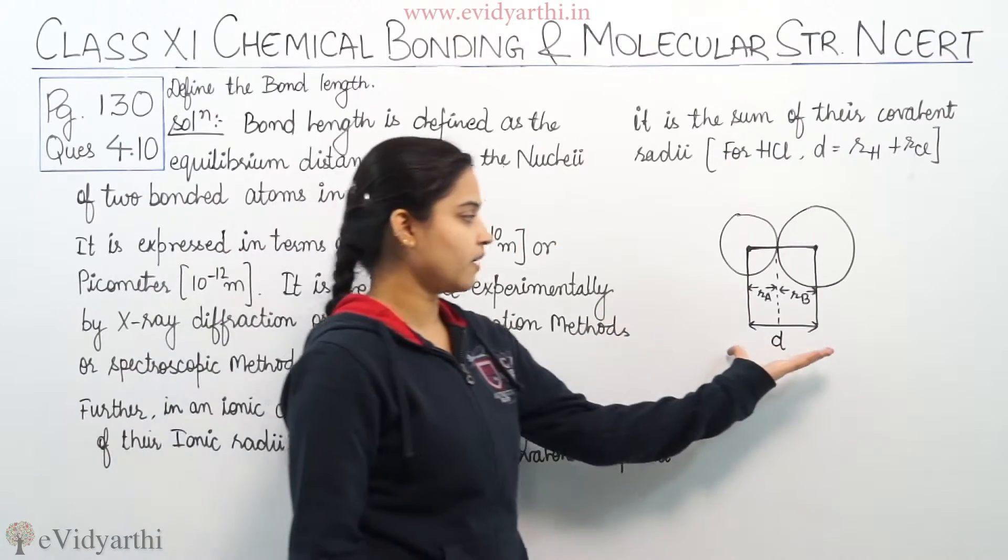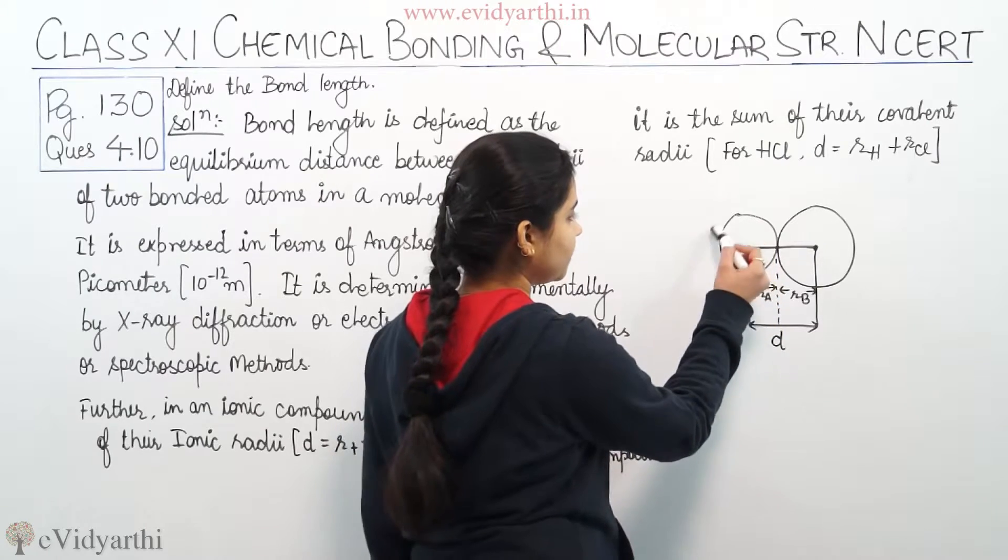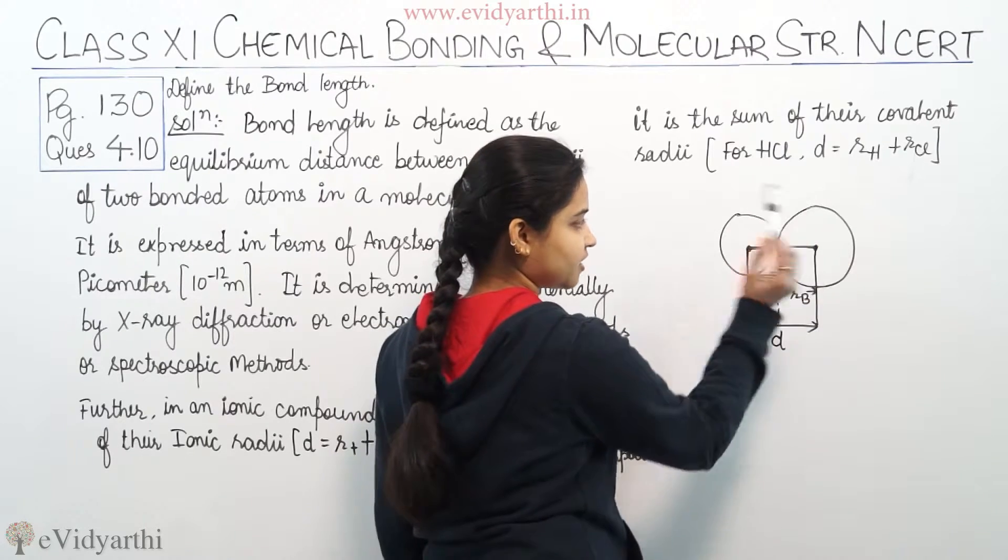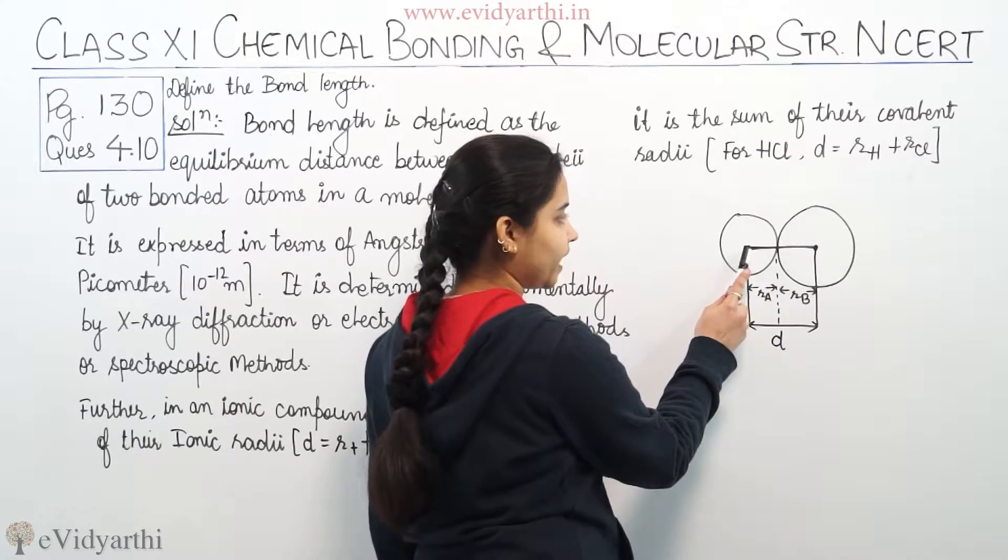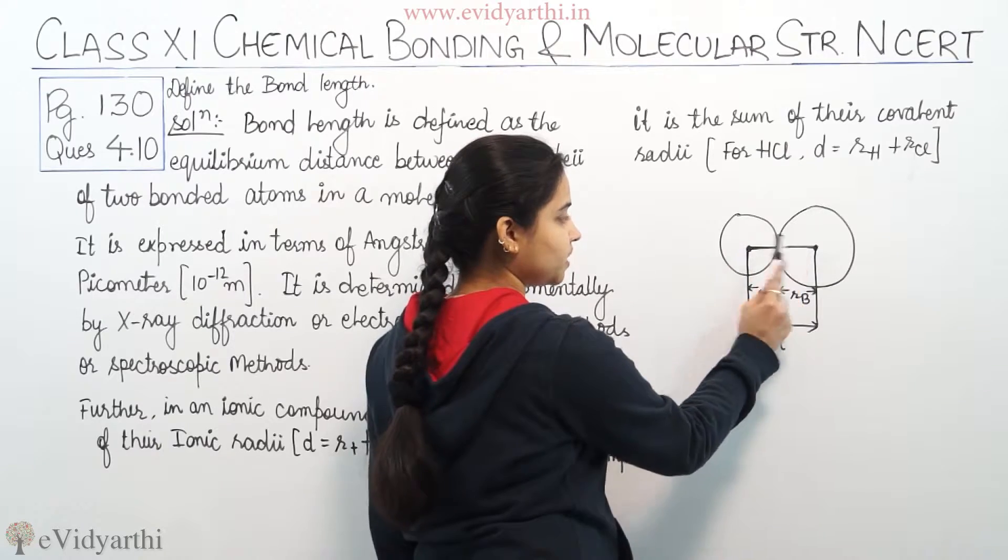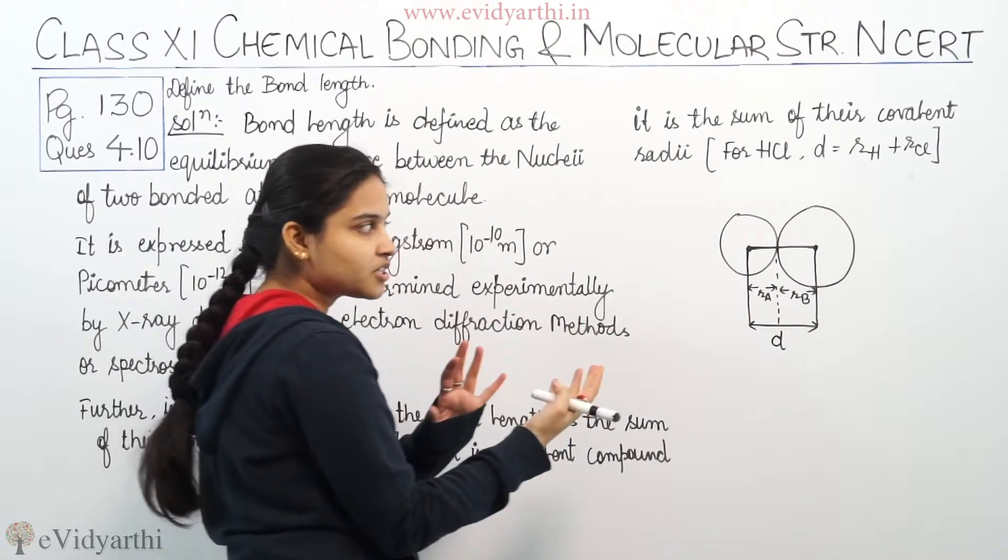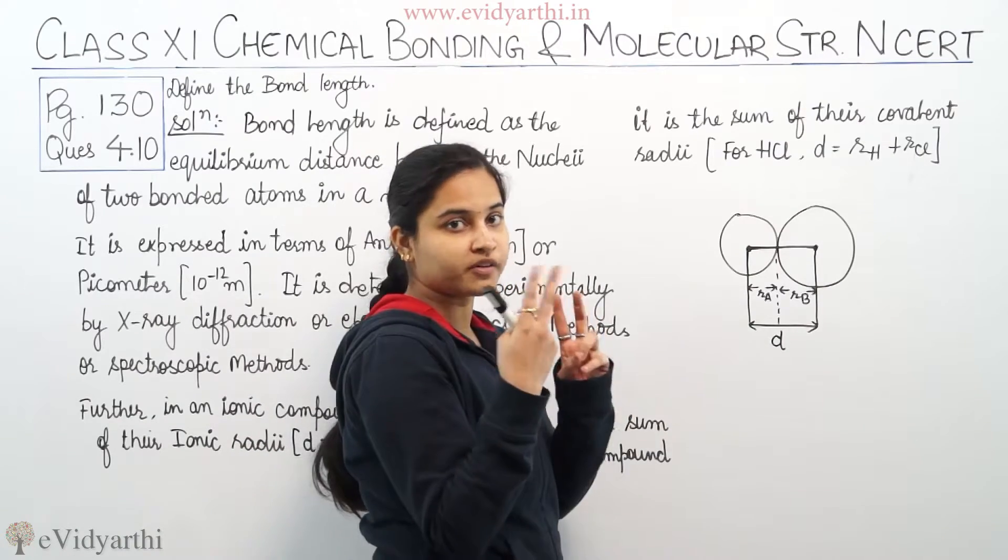So please now have a look over here. See, if H+ is here, this is my Cl-. So nuclei of the H and nuclei of the Cl, what is the bond length? The equilibrium distance between the nuclei of the two bonded atoms.